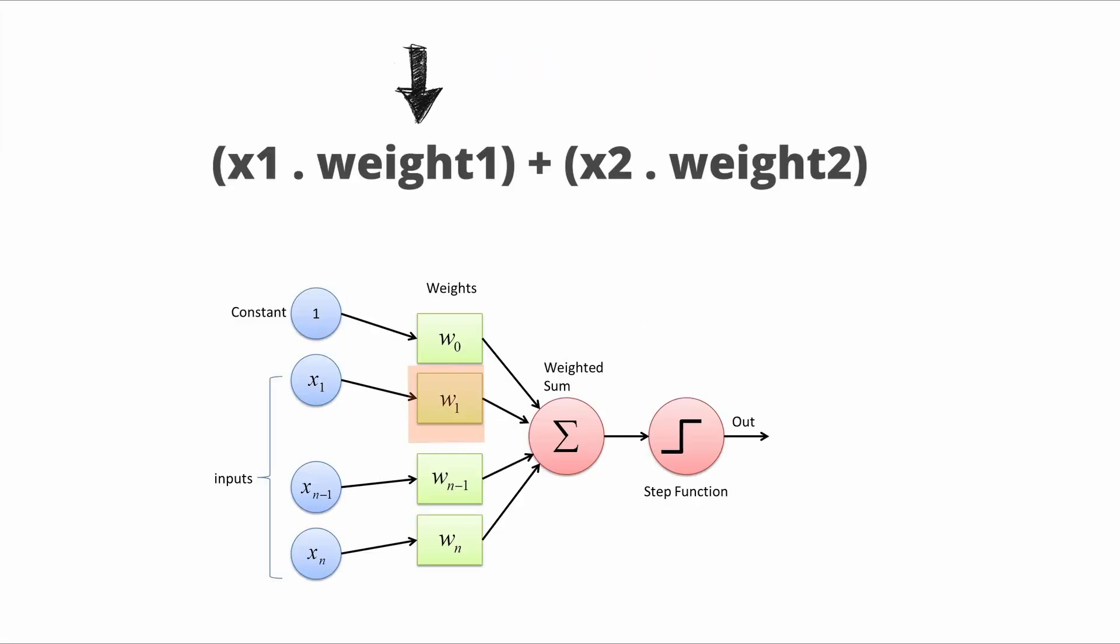Weights are like the ratio of flour to water in a croissant dough. They determine how much importance to give to each input feature so that the network can learn to recognize patterns in the data and make predictions.